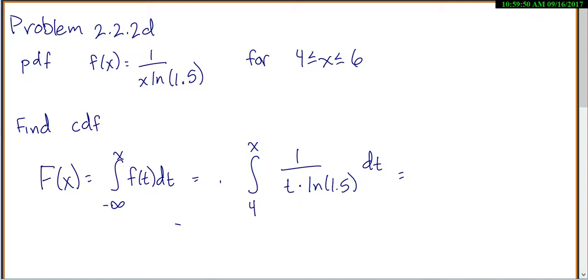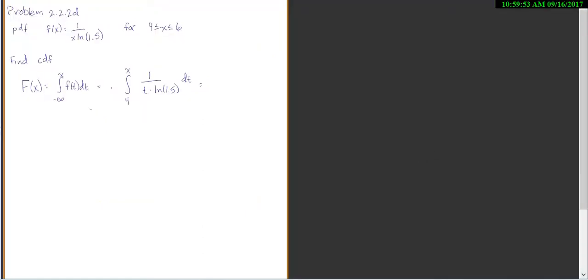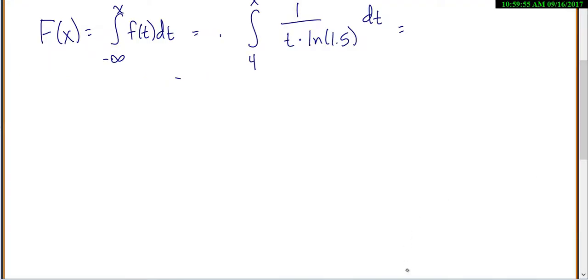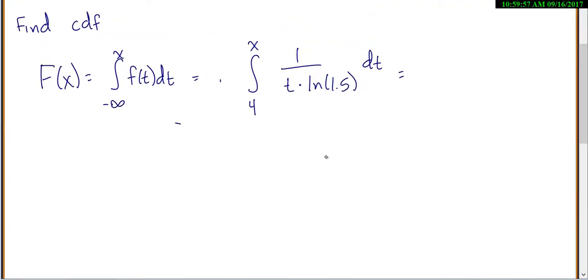So to calculate this integral, the natural log is kind of throwing us off. But the natural log of 1.5 is actually just a number. It's the same as saying, like, 1 over 3 or 1 over 5. Because natural log of 1.5, there's not a variable in it. It's just a number, so just bring it out. So 1 over natural log of 1.5. Or if you prefer, change it to a decimal, if it's really still giving you a hard time. We're still integrating from 4 to x of 1 over t dt.